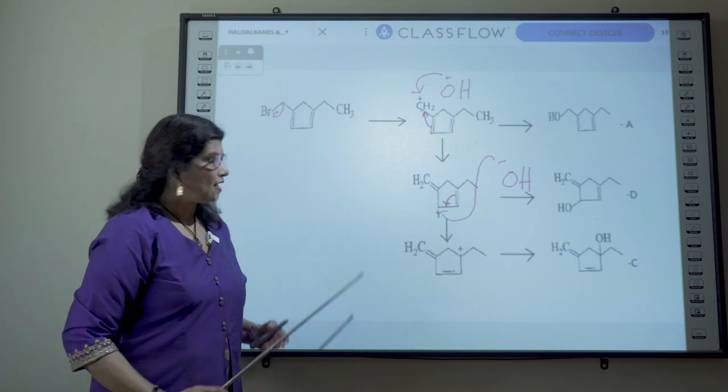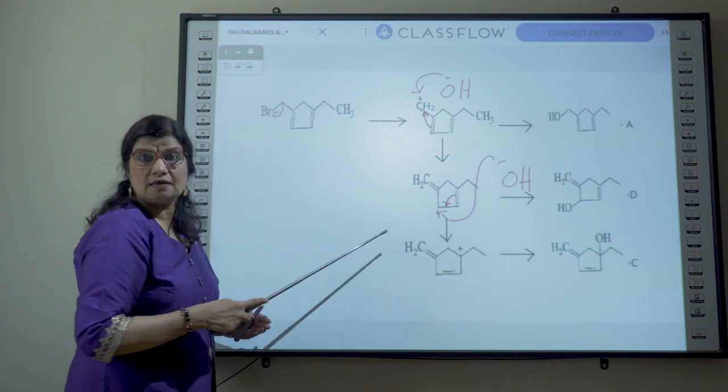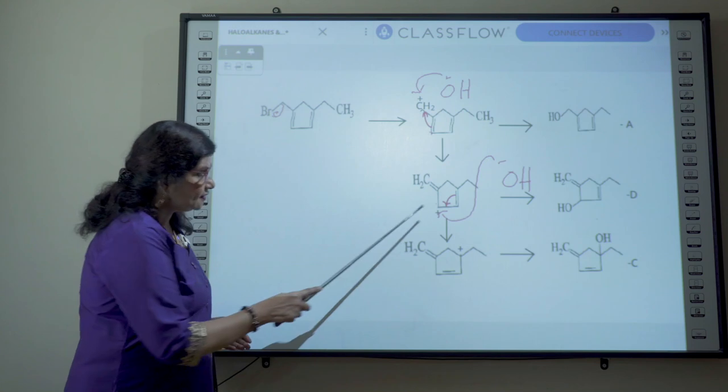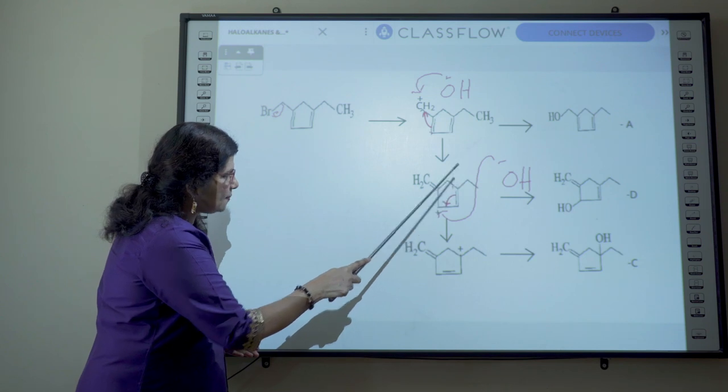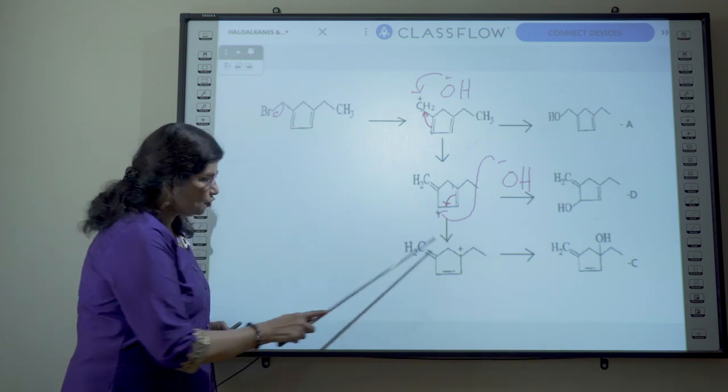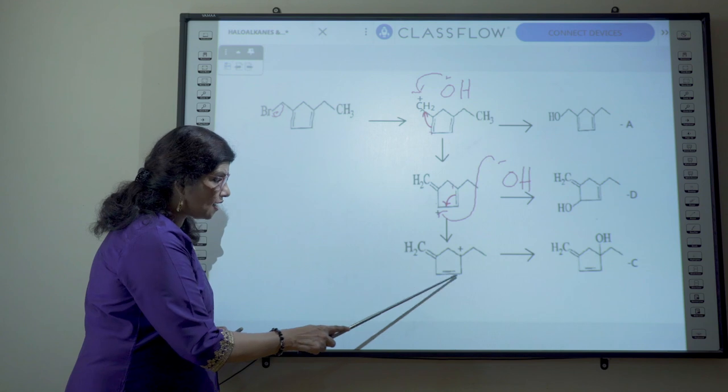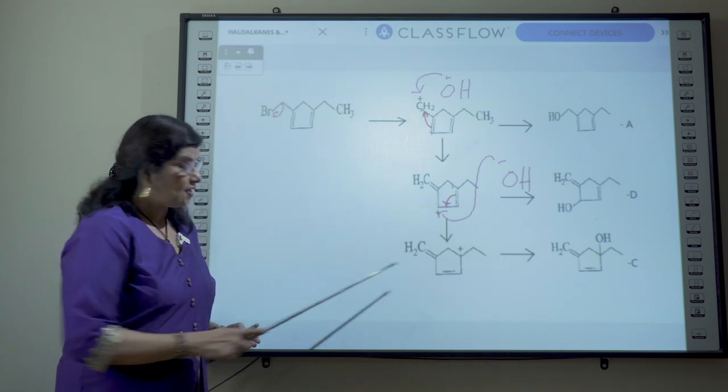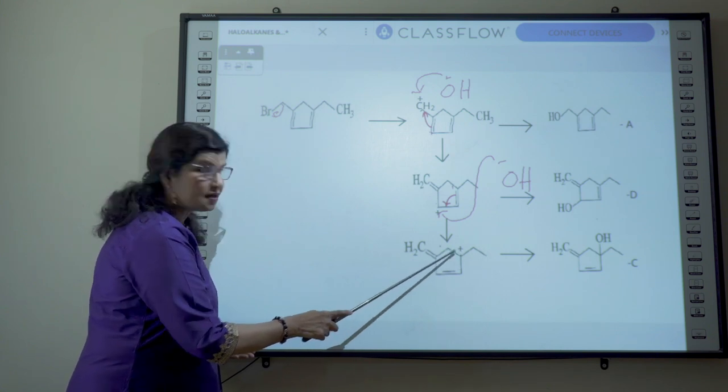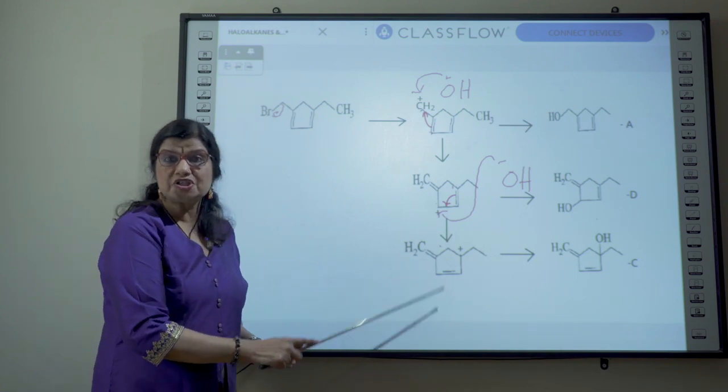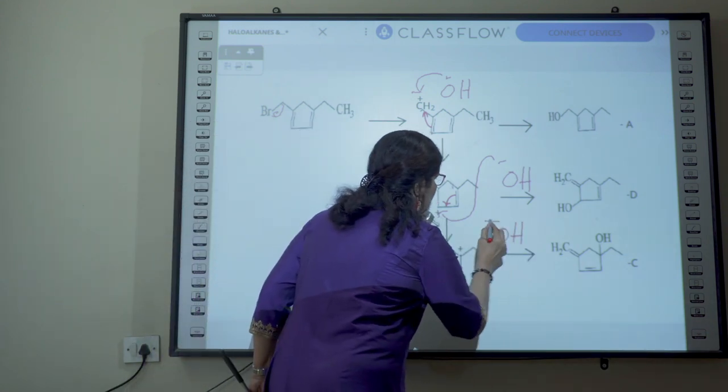Now the attachment of the nucleophile OH minus to this position will result in the formation of this product which is option D. So option D is ruled out. Now this particular positive charge here can be further spread out, delocalized, by the shift of this pi bond to this position as a result of which this position, this carbon atom, acquires a positive charge. You focus on this carbon atom. This carbon atom with a positive charge is again bonded to a carbon carbon double bond.